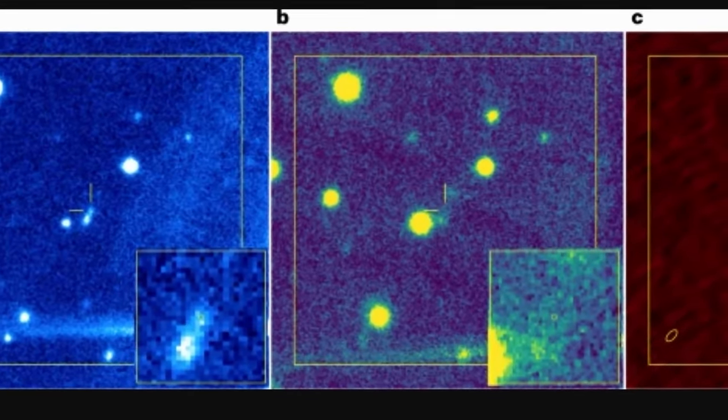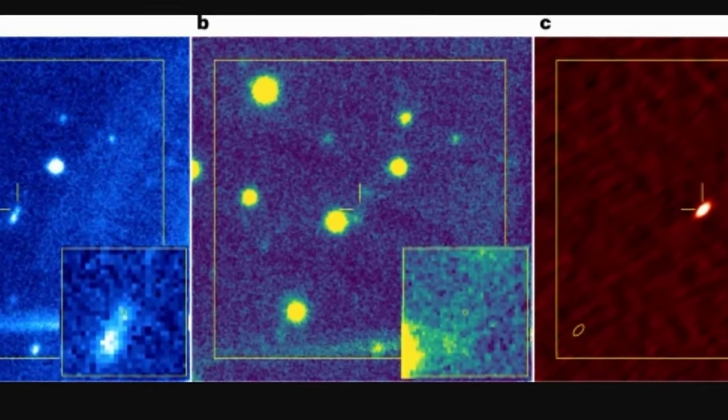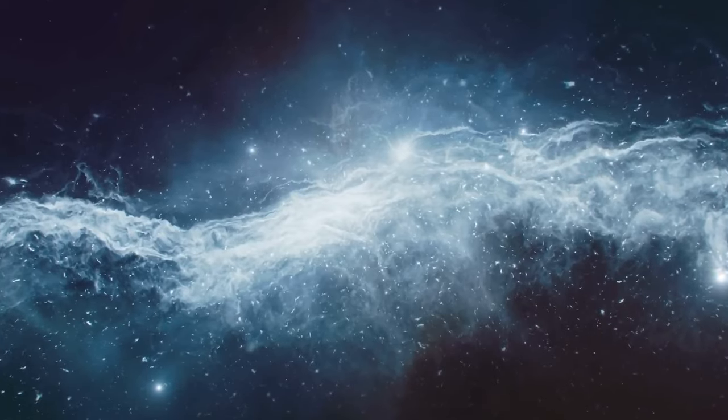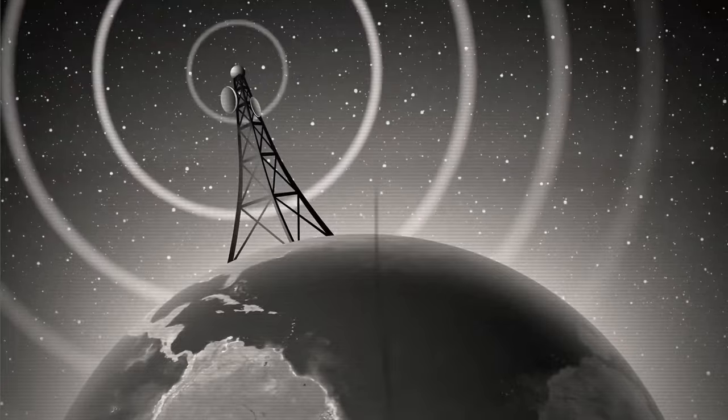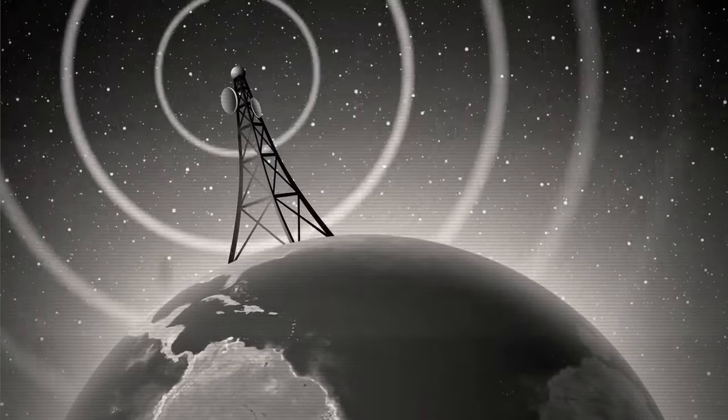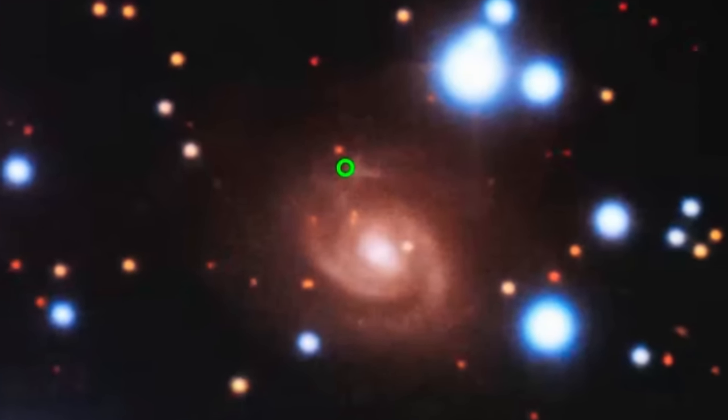Even with all this new information, FRBs themselves are still pretty mysterious. We don't really know what causes these super bright, super short bursts. Some think that it might come from things like magnetars, which are like stars with really, really strong magnetic fields. But it gets more complicated because some FRBs repeat themselves, like one of them was found to go off every 16 days. So scientists wonder how something can explode regularly like that.